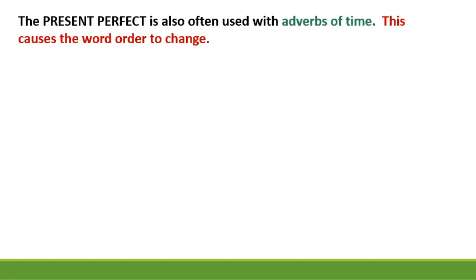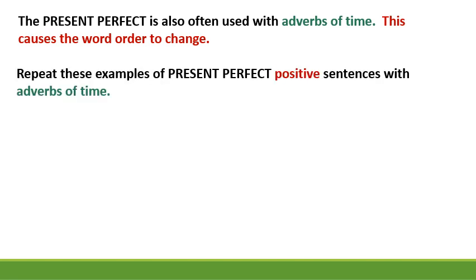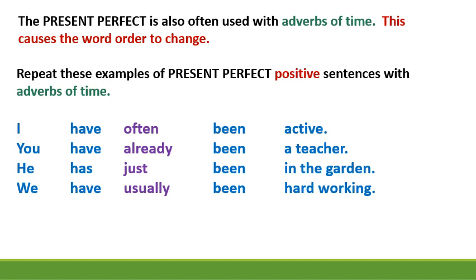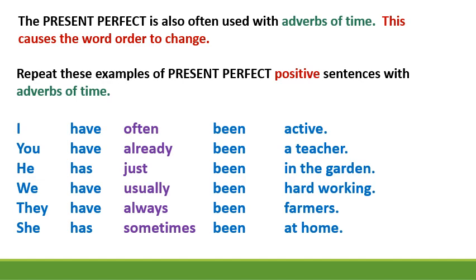The present perfect is also often used with adverbs of time. This causes the word order to change. Repeat these examples of present perfect positive sentences with adverbs of time: I have often been active. You have already been a teacher. He has just been in the garden. We have usually been hardworking. They have always been farmers. She has sometimes been at home.